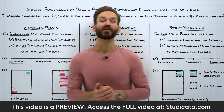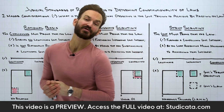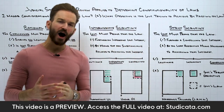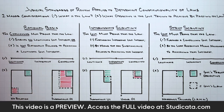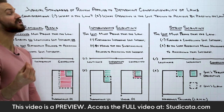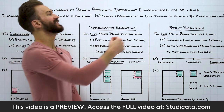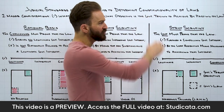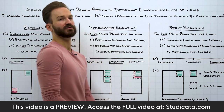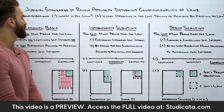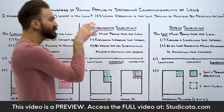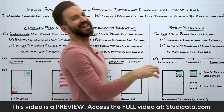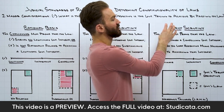In this lesson, we're going to go over the three most common judicial standards of review that are applied by the courts to determine the constitutionality of laws. Of course, we have rational basis, intermediate scrutiny, and strict scrutiny.